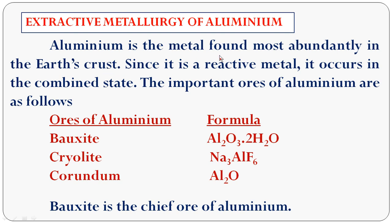Aluminum is the most abundant metal in the earth's crust and is a very reactive metal. It occurs in a combined state, combining with other elements to form oxides, sulfides, halides, etc. The important minerals of aluminum are bauxite (Al₂O₃·2H₂O), cryolite (Na₃AlF₆), and corundum (Al₂O₃). The chief ore of aluminum is bauxite, with molecular formula Al₂O₃·2H₂O.